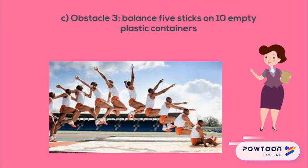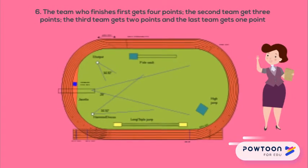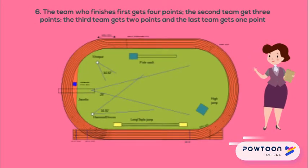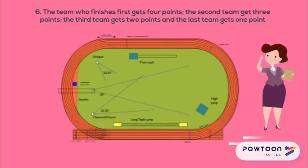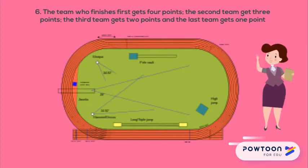Number six, the team who finishes first gets four points, the second team gets three points, the third team gets two points, and the last team gets one point. Number seven, Team A and B run the 400 meters and Team C and D now take their turn.